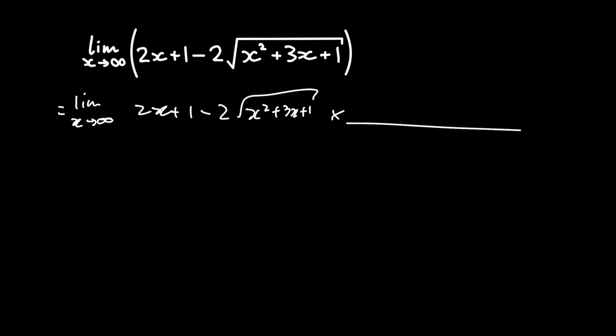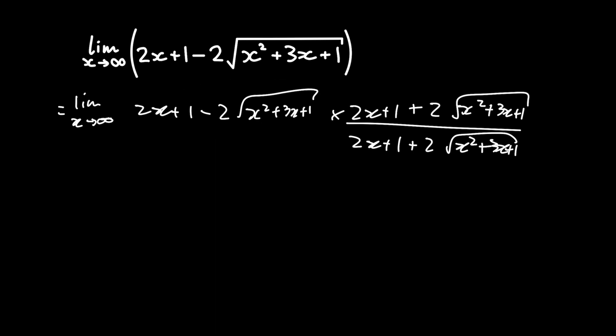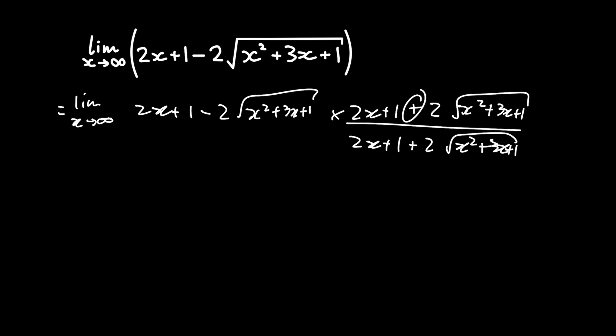We have 2x plus 1 minus 2 into the square root of x squared plus 3x plus 1. Now I'm going to multiply this by 1, where 1 is a fraction that is itself divided by itself. I'll let that fraction be 2x plus 1 plus 2 into the square root of x squared plus 3x plus 1, all over the same thing. The reason I chose this is so I can do the reverse of the difference of two squares, because here I have a negative sign and here I have a positive sign.